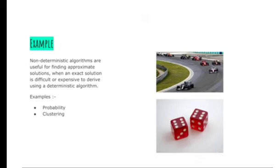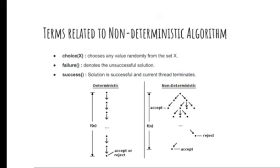Terms related to non-deterministic algorithms: choice(x) chooses any value randomly from the set x; failure denotes an unsuccessful solution; success means the solution is successful and the current thread terminates.